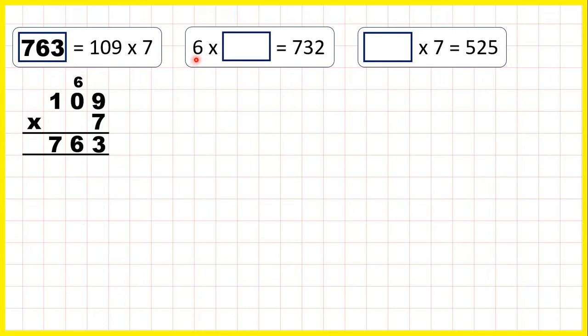Now we have 6 times something equals 732, so one of the numbers in our multiplication question is missing, and when this happens we need to use the inverse operation, so we need to use division to find the missing number.